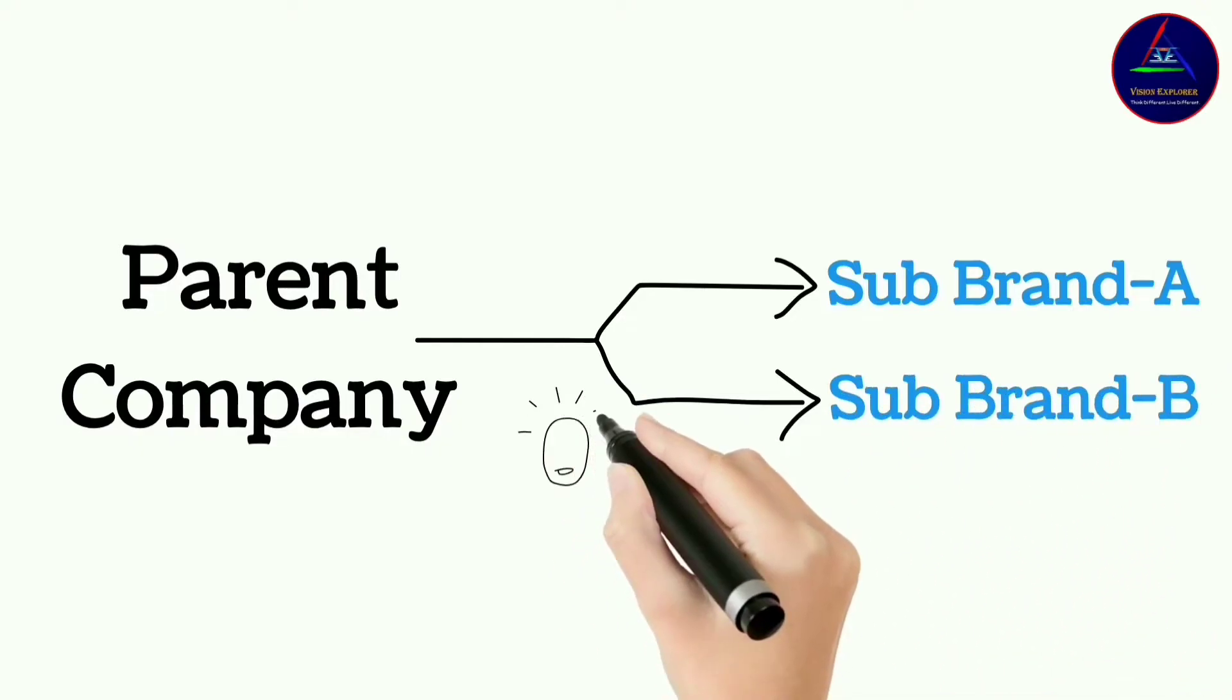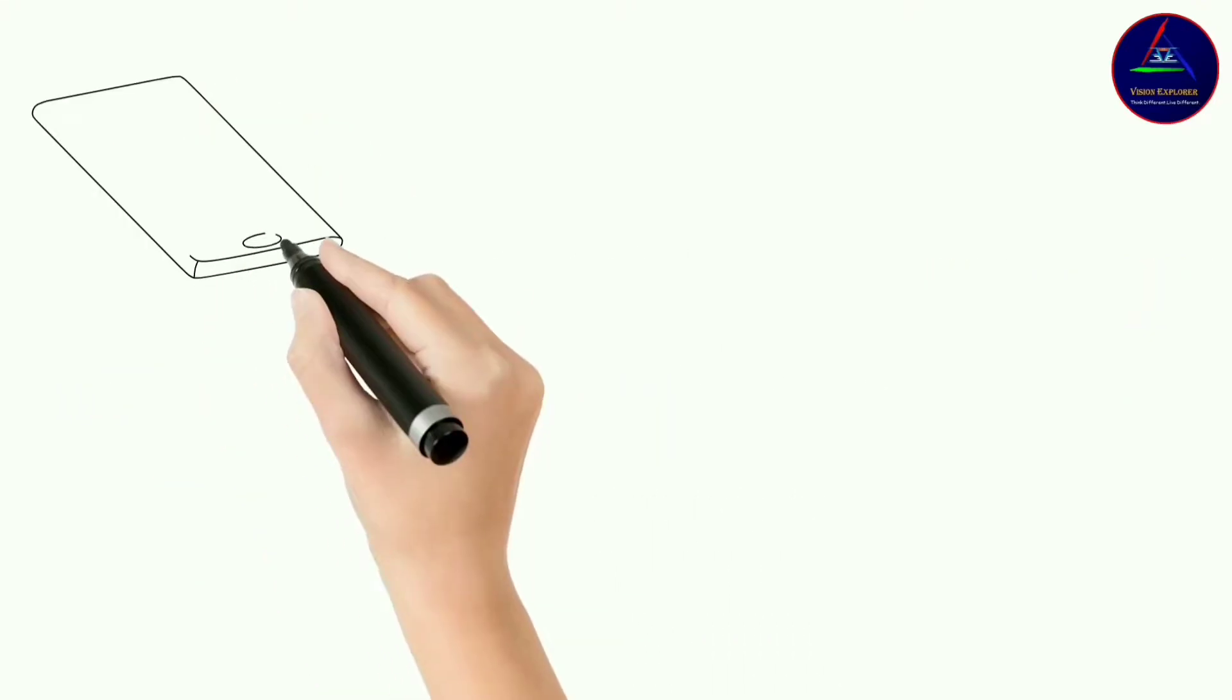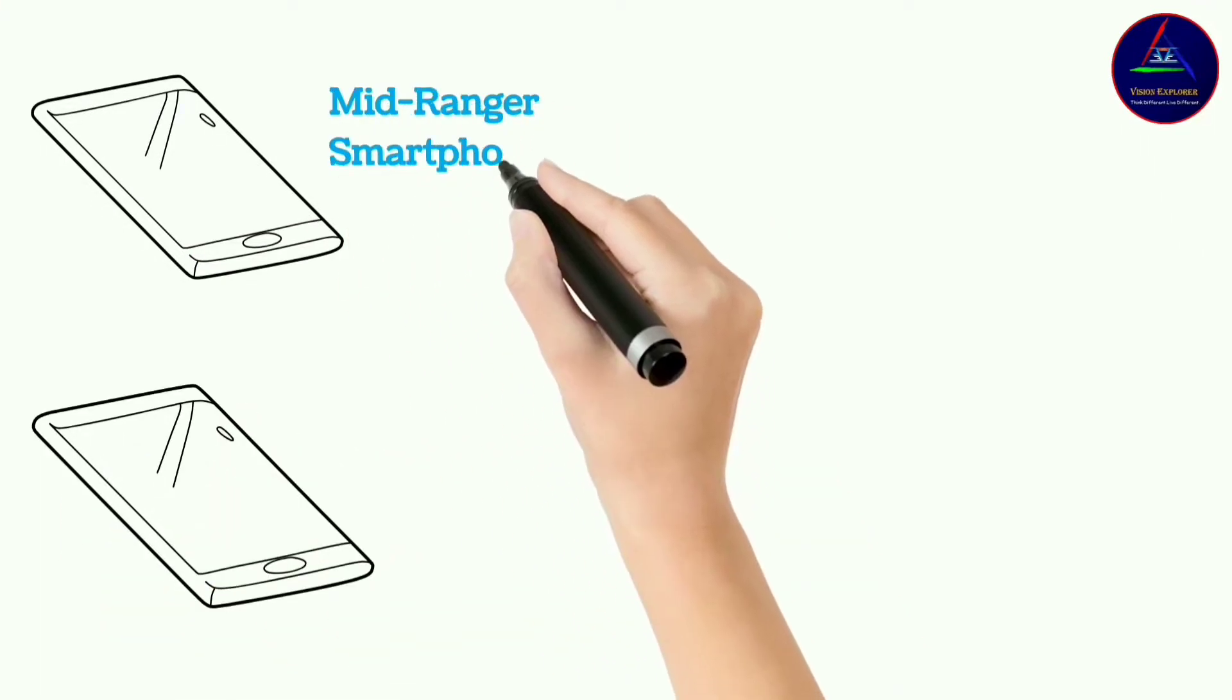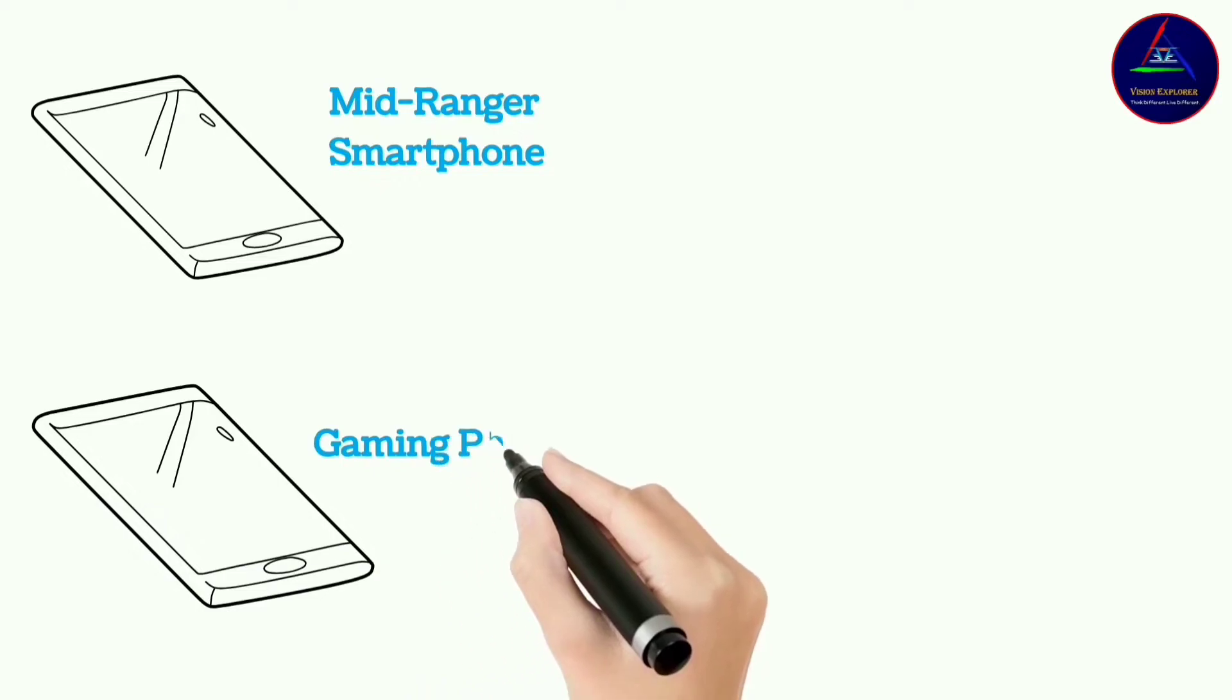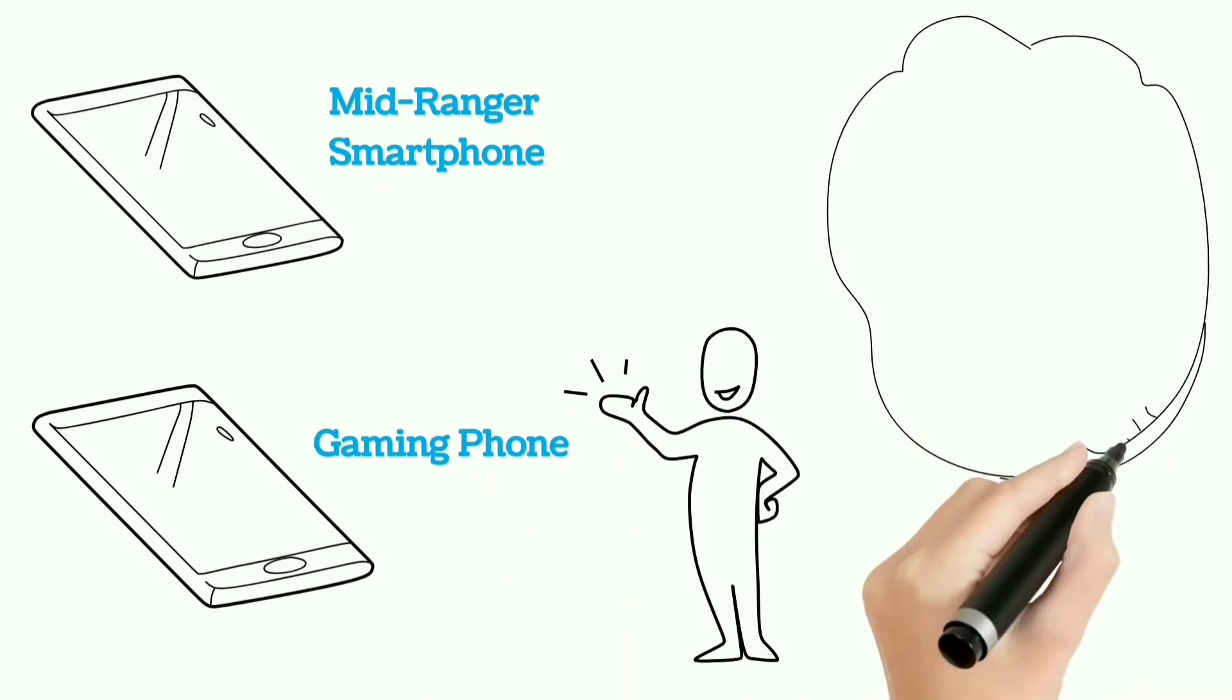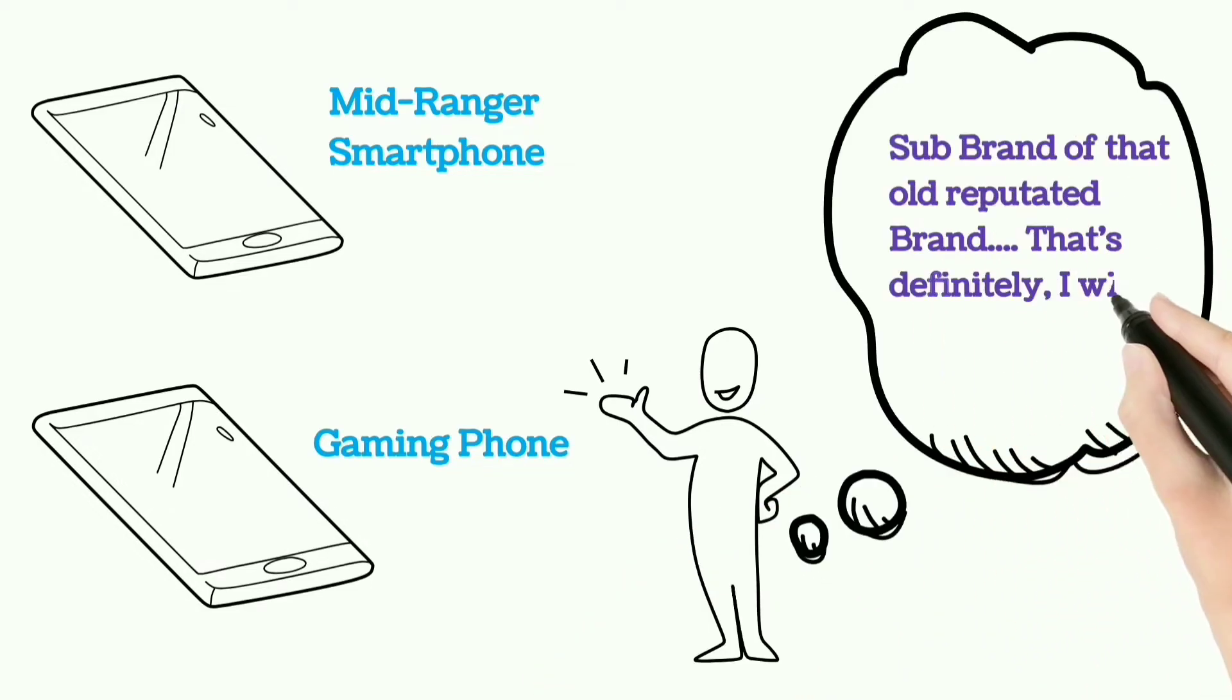But in a different manner. Like if parent company is famous for making high-end phones, the subbrand will make mid-rangers. Or if parent company is famous for making budget phones, now subbrand can make gaming phone. Customer will see subbrand as a specialized manufacturer for the particular feature, and old gold reputation of parent company will be the icing on the cake, which can ensure win-win for the parent company.